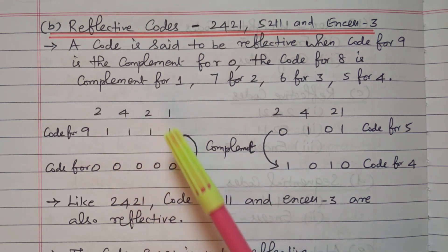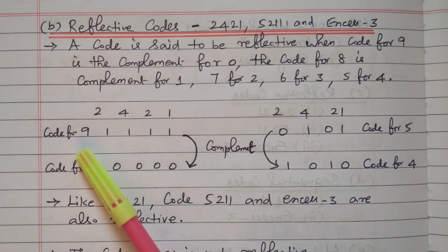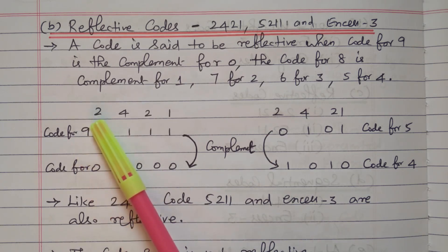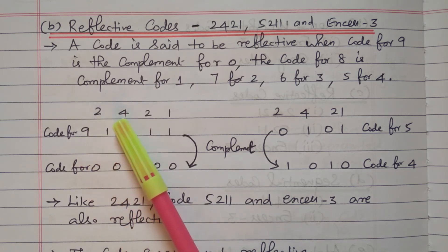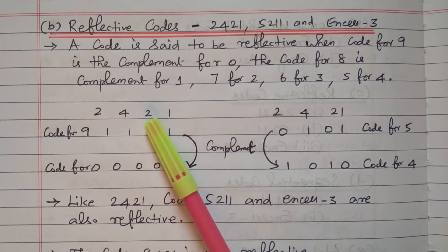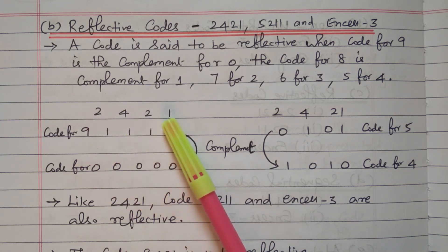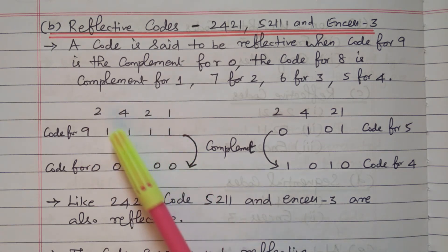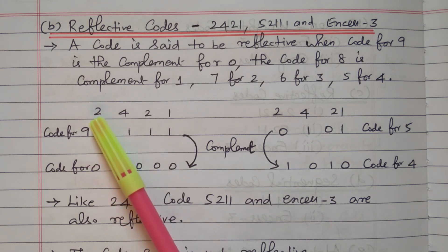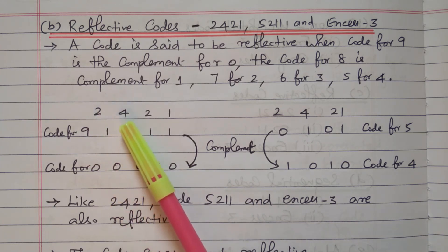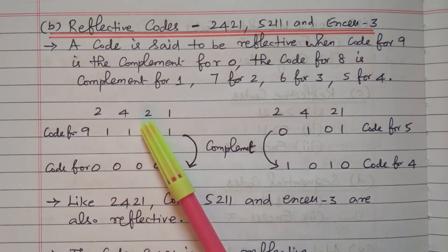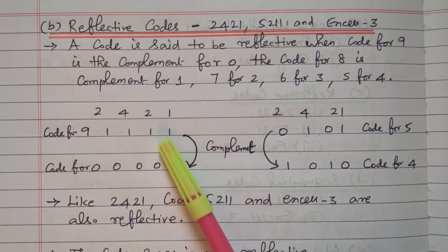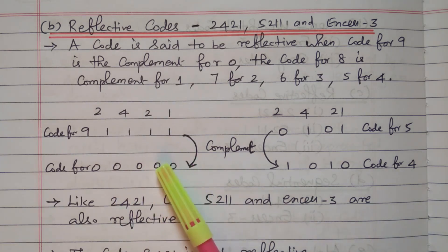For the code for nine, we need nine. See: two plus four is six, six plus two is eight, eight plus one is nine. So we need to make all the digits one so that we will get the total value of nine. Two plus four is six, six plus two is eight, eight plus one is nine. These are all complement. Code for nine is 1,1,1,1 and code for zero is all zeros.